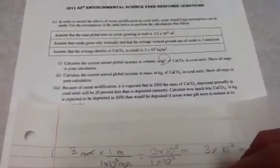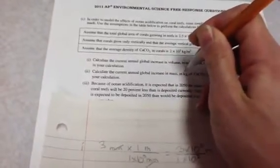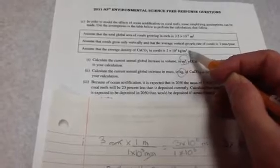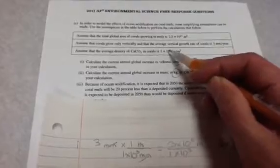Part two: Calculate the current annual global increase in mass in kilograms of the calcium carbonate in coral reefs. Show all steps. Now they want me to take the number I just got in meters cubed and turn it into kilograms. Right here, it has a number with kilograms and meters cubed. My last answer was in meters cubed, so I can use this number to cancel out meters cubed and be left with kilograms.